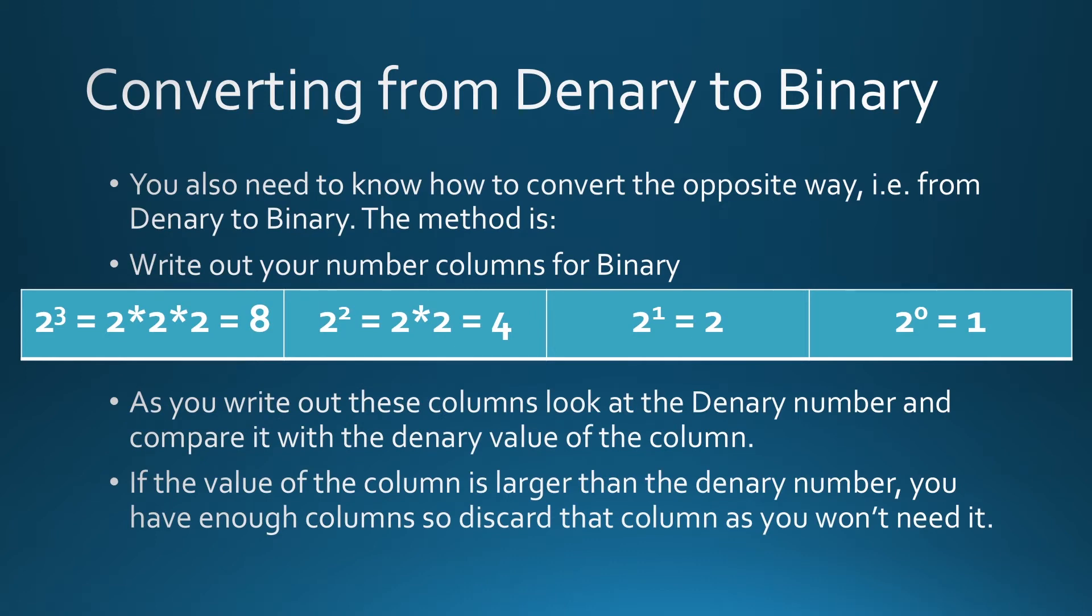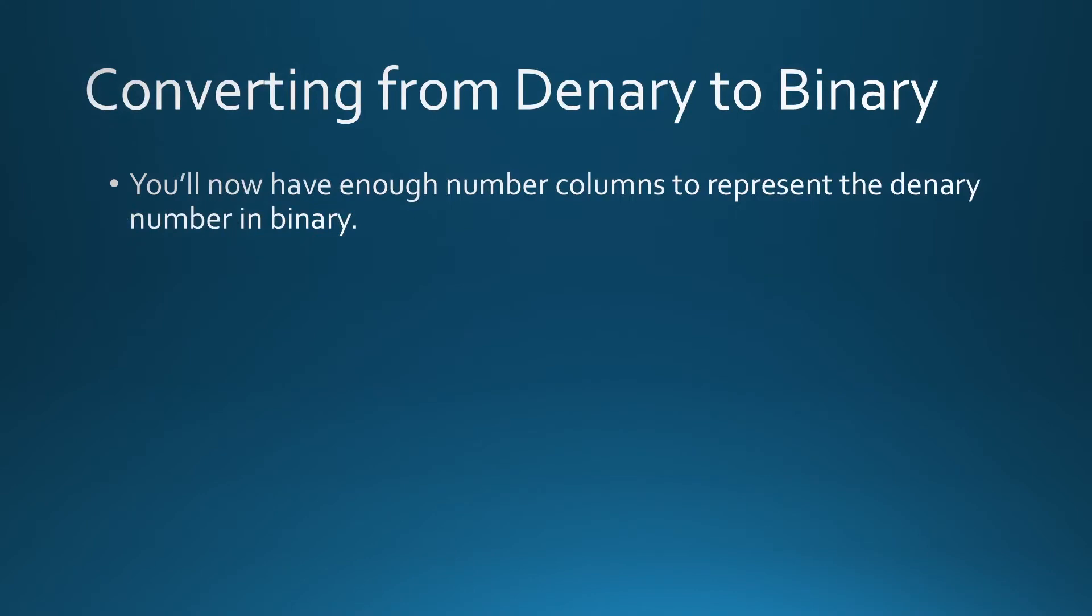So normally you're working in 8 columns and you just do it all the time. But if you want to save yourself some time, just look at the number you have. If the value of the left-hand column is larger than the denary number you're going to convert, you're never going to need that column or anything more to the left of it, so ignore it. But assuming you now actually have enough columns to represent that number, the number you have, look at the left-most column.